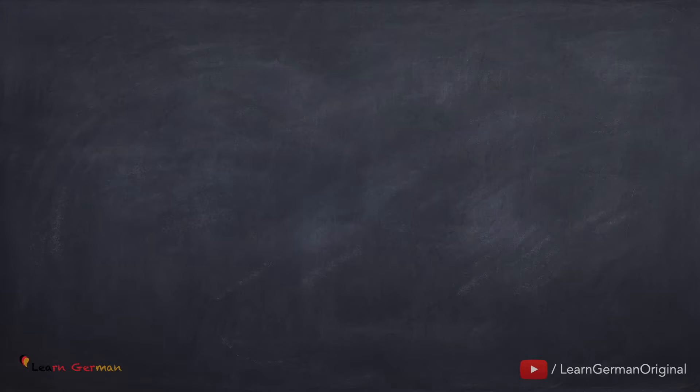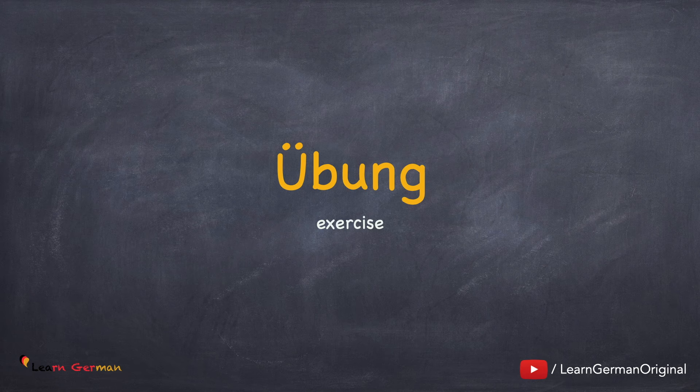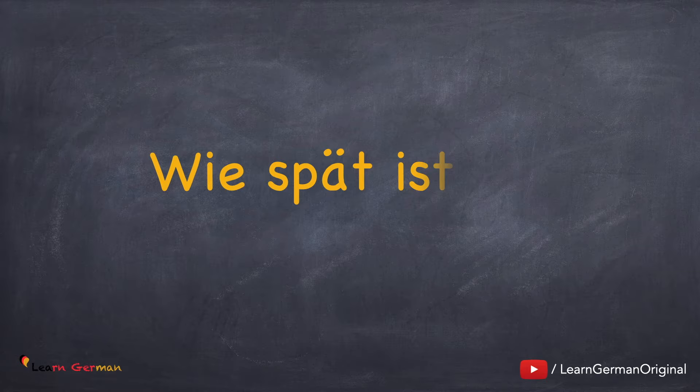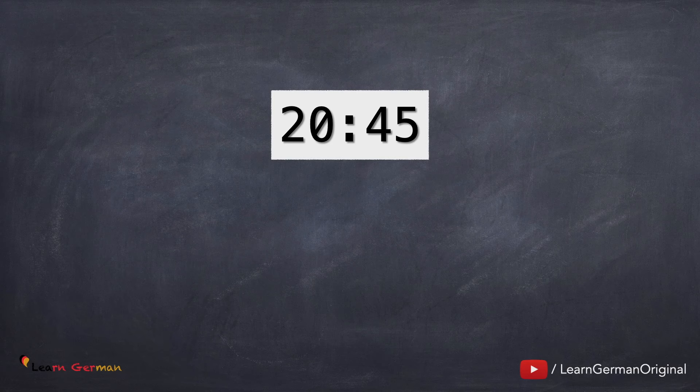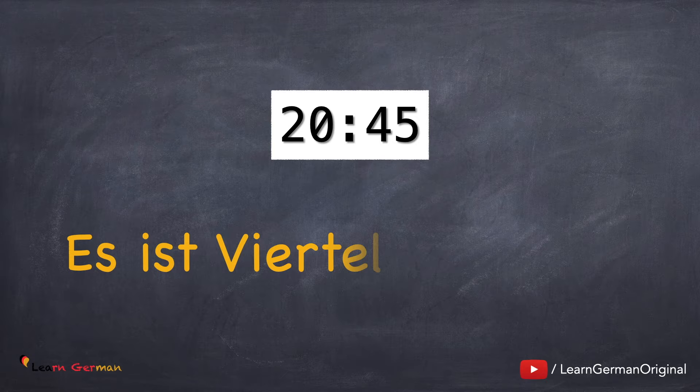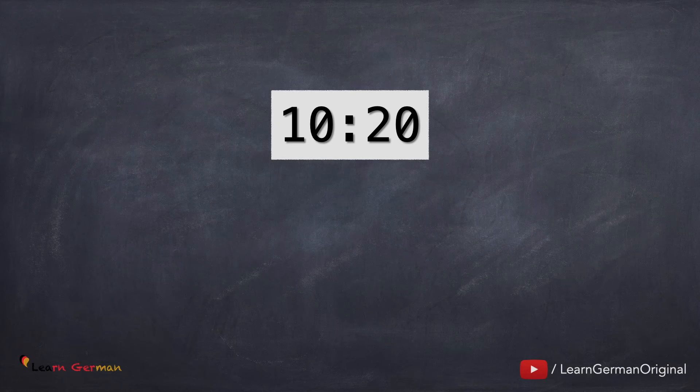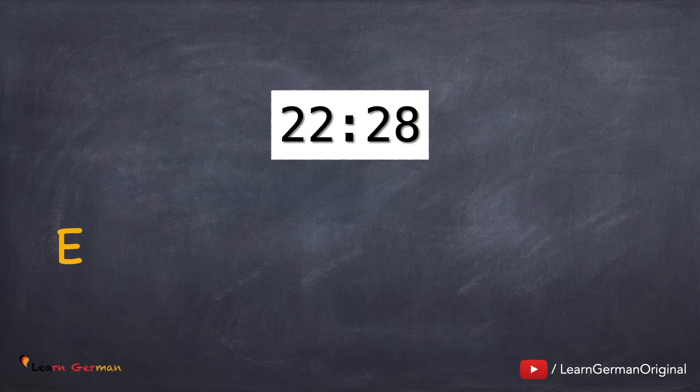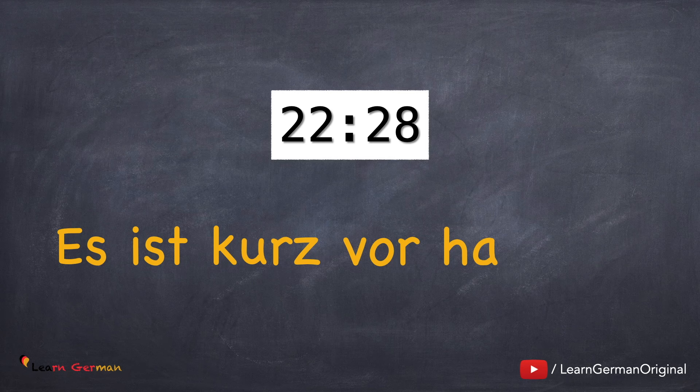Now let's do an exercise to see how much you have understood. Übung. Wie spät ist es? The answer to the first one should be Es ist viertel vor neun. The answer to the next one should be Es ist zwanzig nach zehn. And the last one — your answer should be Es ist kurz vor halb elf.